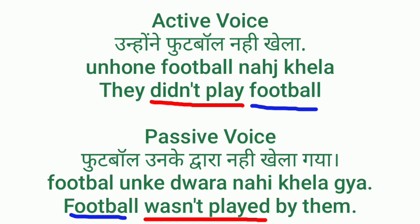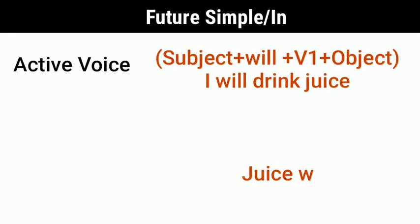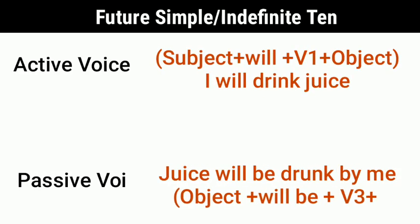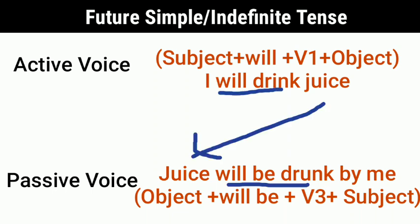Now let's learn Future Simple passive voice. 'I will drink juice' — this is the active voice. In passive: juice was the object so it becomes subject. Structure: will be + verb third form + by subject. 'Juice will be drunk by me' — 'I' becomes 'me.' Third form of 'drink' is 'drunk.'